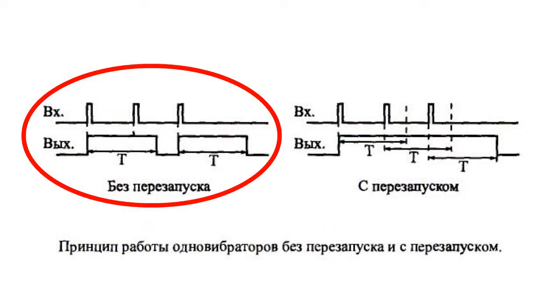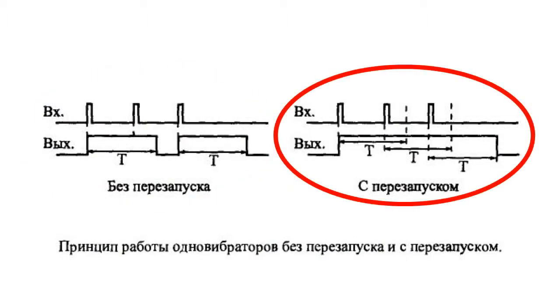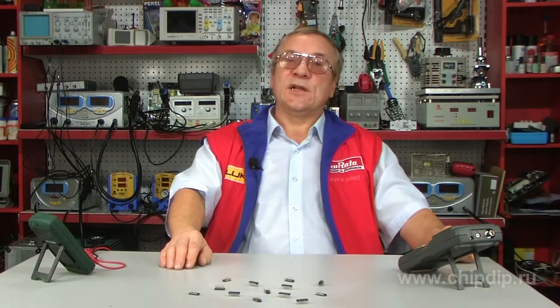The single vibrator without restart does not react to the incoming signal until the termination of its current output impulse. The single vibrator with restart starts counting out a new exposure time T with every incoming signal, regardless of whether the former exposure time has ended. If the sequence period of the incoming signal is less than the exposure time T, the single vibrator's output impulse does not break off.